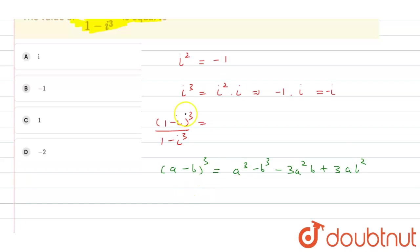Now apply this property. Here a value is 1 and b value is iota. So we get 1 minus iota cube minus 3 into 1 into iota plus 3ab square means 1 into iota square, and in the denominator 1 minus iota cube.